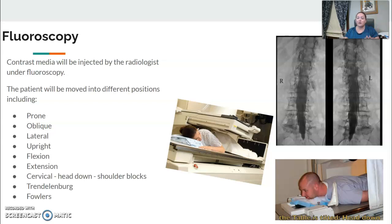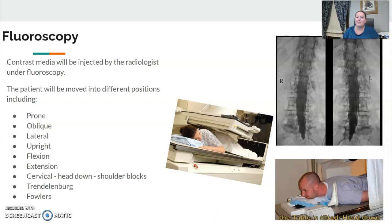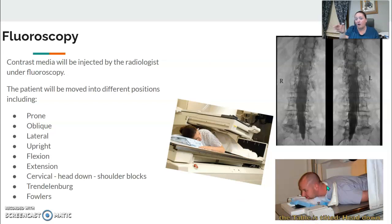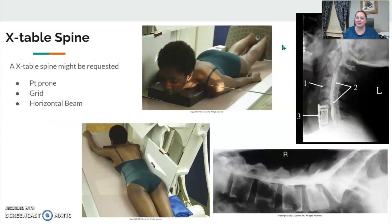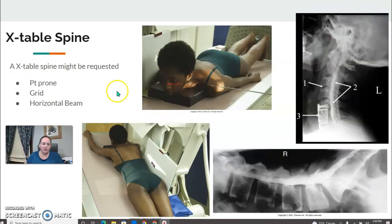The cervical myelogram is a little involved — shoulder blockers are placed, and the patient is tipped head down and feet up so the contrast moves toward the cervical spine. Cervicals aren't as common as lumbars. As the patient is adjusted, the contrast moves into different areas. For a cervical study without a cisternal puncture, contrast needs to travel from L3-L4 all the way up to the cervical spine using gravity. At the end, you may be asked to do a cross-table C-spine or lumbar spine with a horizontal beam and grid cassette.